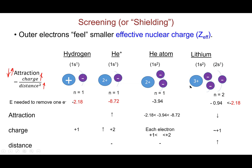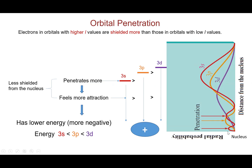The shielding effect results from the orbital penetration effect. Comparing 3s, 3p, and 3d orbitals — they are mainly at more or less the same average distance from the nucleus. However, the s electron spends some time closer to the nucleus, penetrating more than the p orbital and more than the d orbital. That higher penetration makes it feel more nuclear attraction. This explains why 3s has lower energy than 3p, which has lower energy than 3d — because 3s penetrates closer to the nucleus.